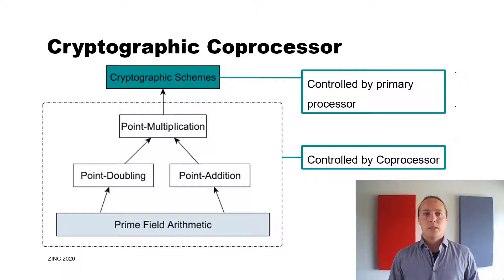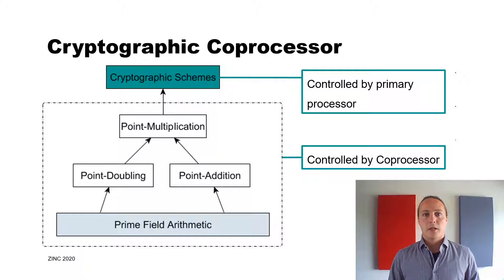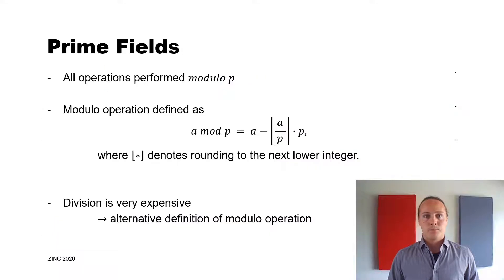The point multiplication is computed using two point arithmetic operations called point doubling and point addition, which are in turn based on prime field arithmetic. In prime fields, all arithmetic operations are performed modulo p.